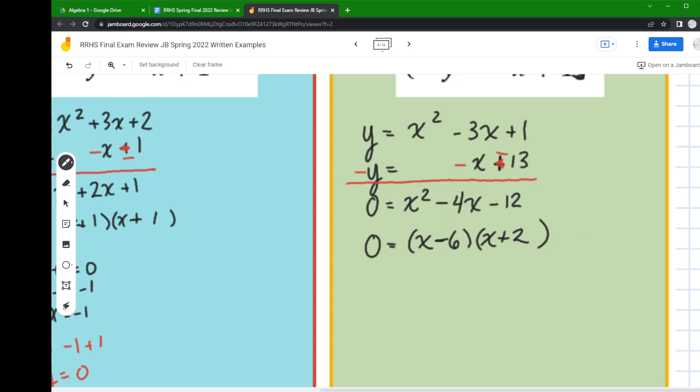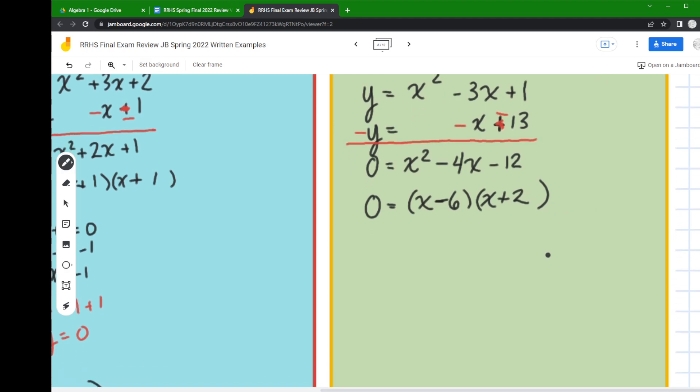Next up we make our mini equations using the zero product property. So I say x minus 6 equals 0 and x plus 2 equals 0, and I solve those mini equations by adding or subtracting.